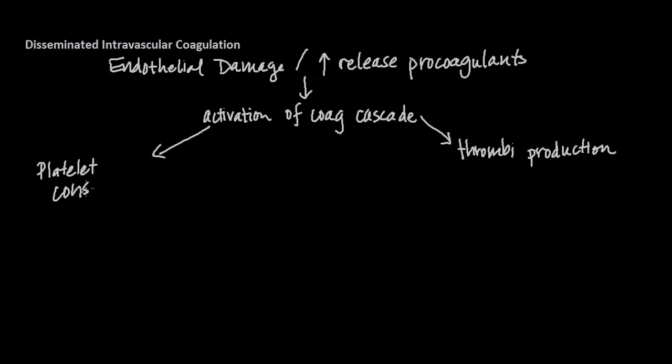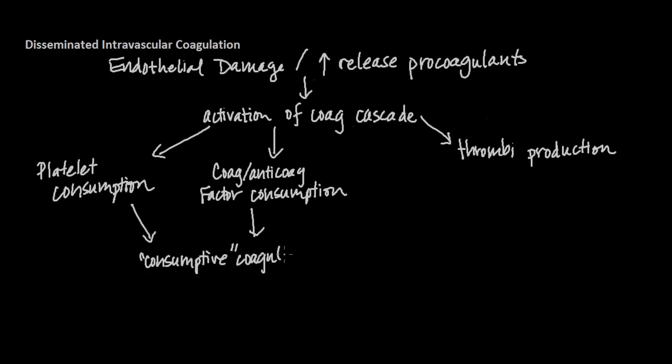Extensive formation of thrombi in turn leads to consumption of platelets, coagulant and anticoagulant factors. Rapid consumption of factors outpaces their production, creating a consumptive coagulopathy with impaired coagulation.